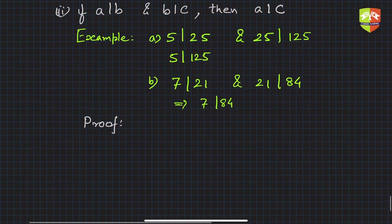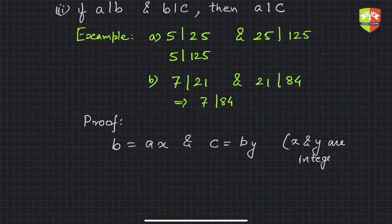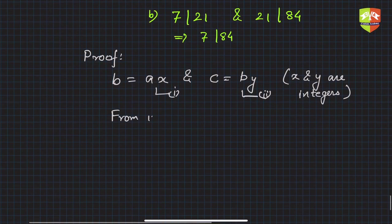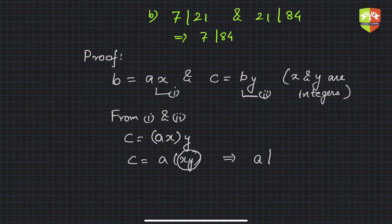Let's prove this. If a divides b, then b = ax, and if b divides c, then c = by, where x and y are integers. Substituting b = ax into the second equation: c = (ax)y = axy. Since xy is an integer, by the definition of divisibility, a divides c. Proved.